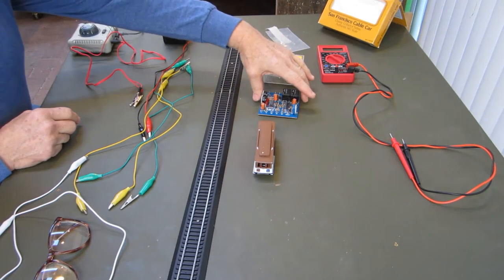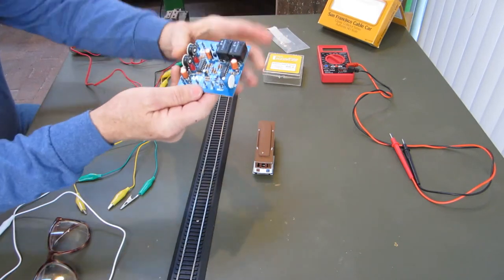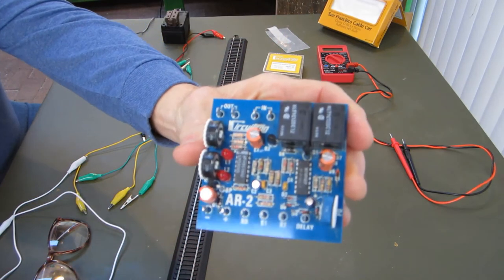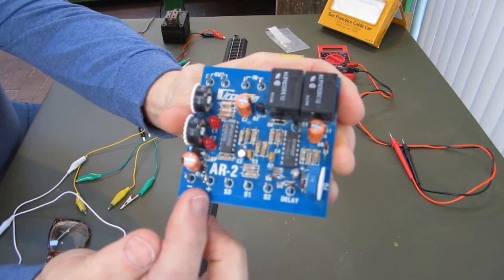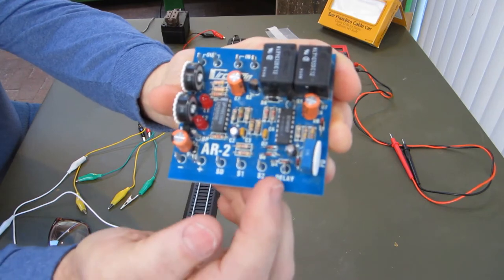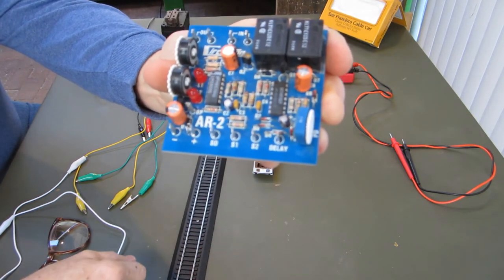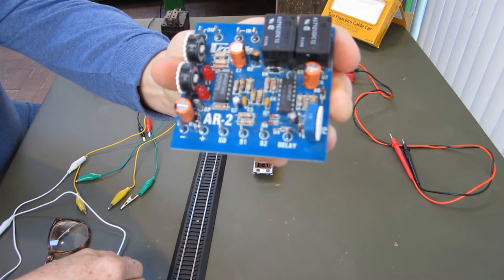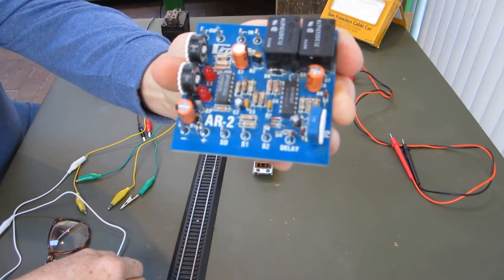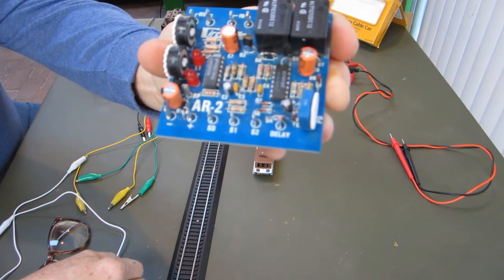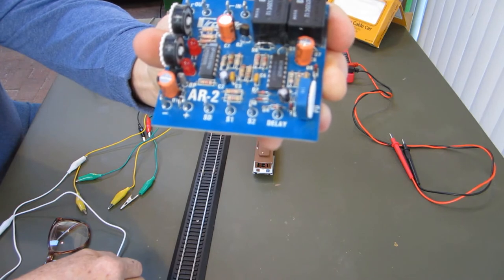This is the Circuitron circuit board. As you can see, the posts are all clearly marked for the wiring. The one that says delay is used in connection with Circuitron's DT4 if you want intermittent stops between the end of your line. I will not be doing that today.